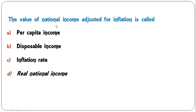Which of the following is added to national income while calculating personal income? As we have seen, transfer payments to individuals are added, whereas social security contribution, corporate tax, and undistributed profits are deducted from national income. Transfer payments are added to national income while calculating personal income. So A is the correct answer.